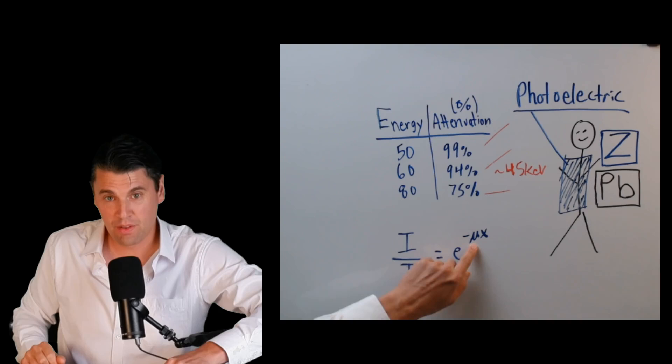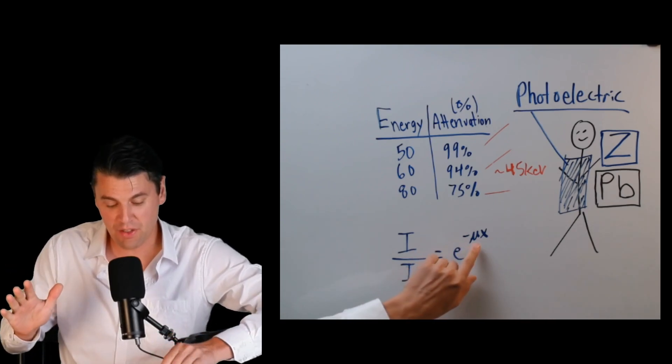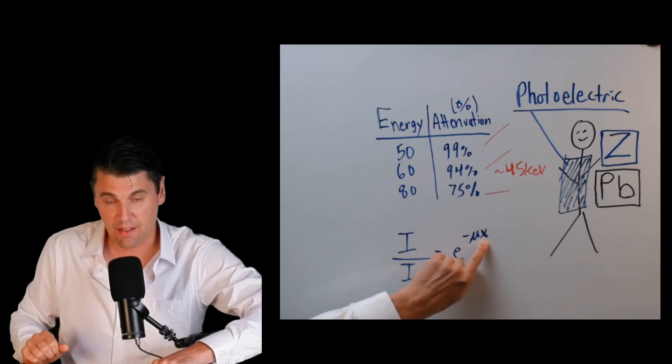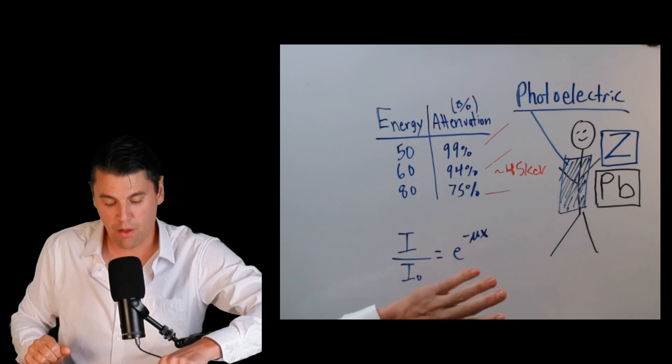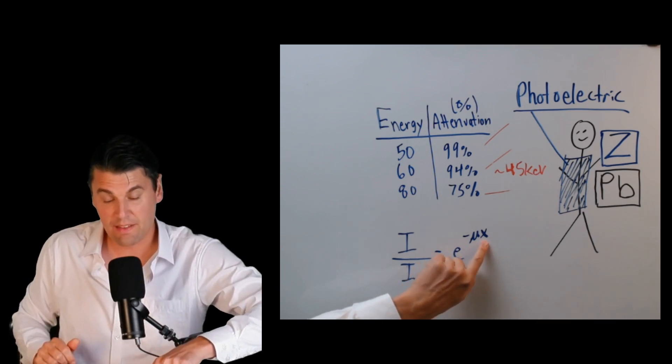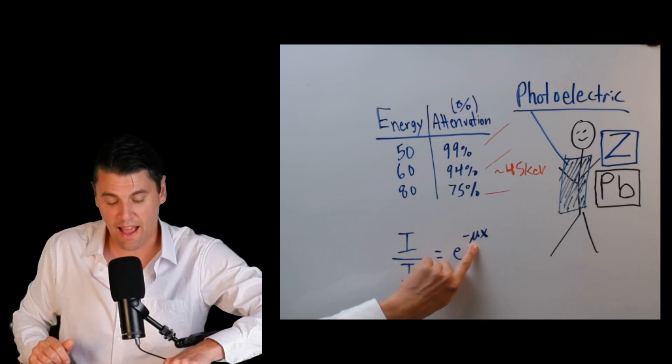That's the property of the material. x is actually the thickness. Both of those things will impact how many x-rays get stopped, something that's thicker, and something that has a higher attenuation coefficient.